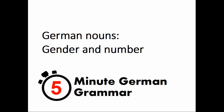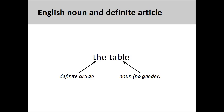This video will examine the gender and number of German nouns. A noun is a part of speech that names a person, place, thing, or idea. In modern English, nouns usually do not manifest any grammatical gender. The only definite article in English is 'the.'